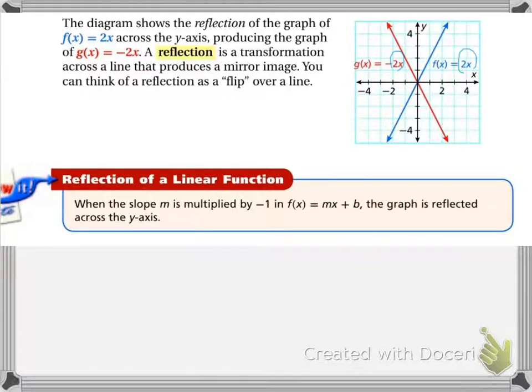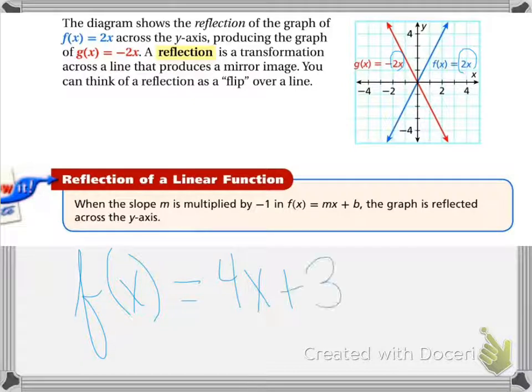We're talking about reflections where the slope is all that's going to change. In this graph, you see that the parent function was 2x, and then the child function is negative 2x. If you had f(x) equals mx plus b, your equation would look like f(x) equals, say we had 4x plus 3, the reflection of that would be just to change this 4 to negative 4. And that's going to reflect it across the y-axis.